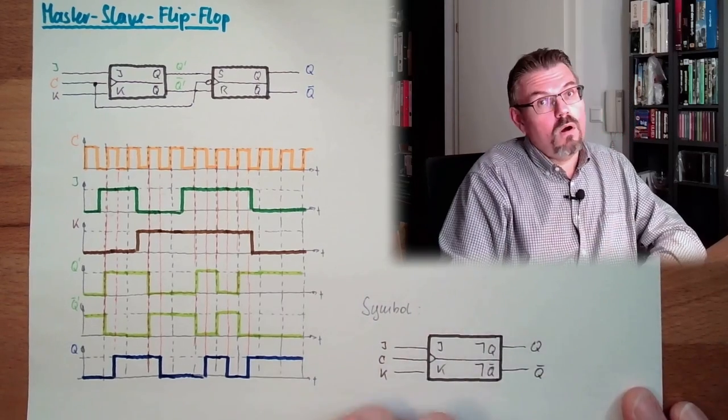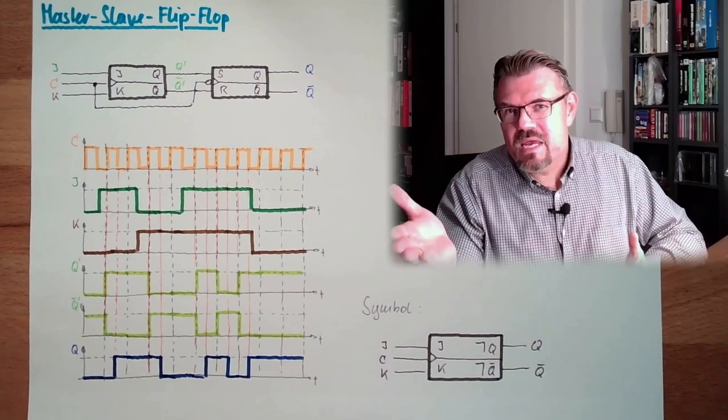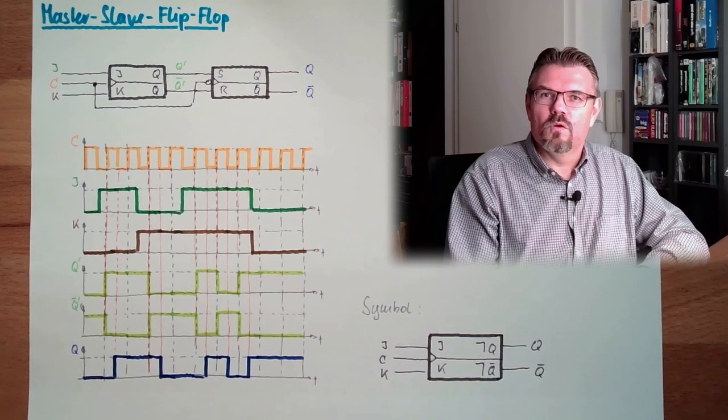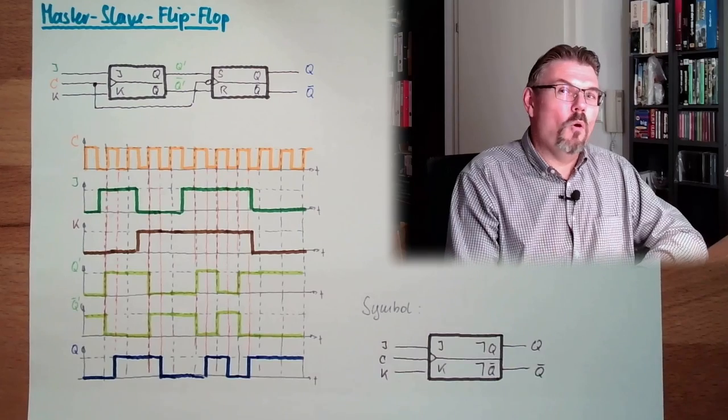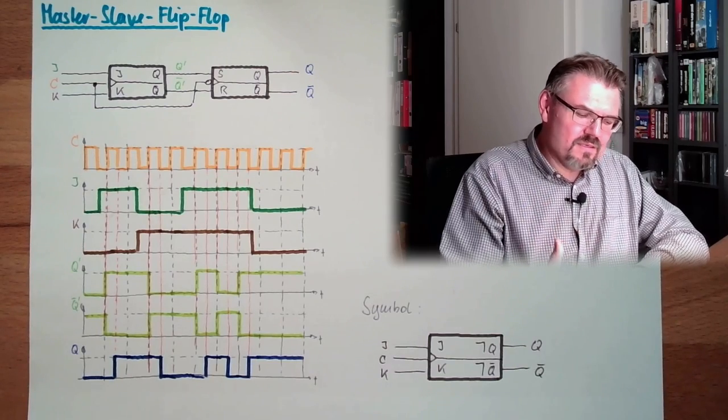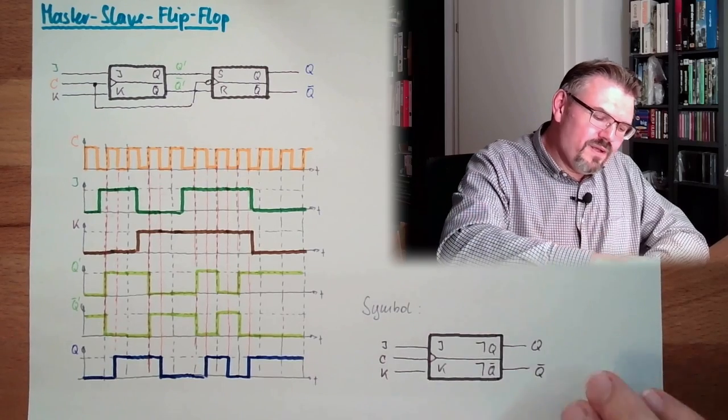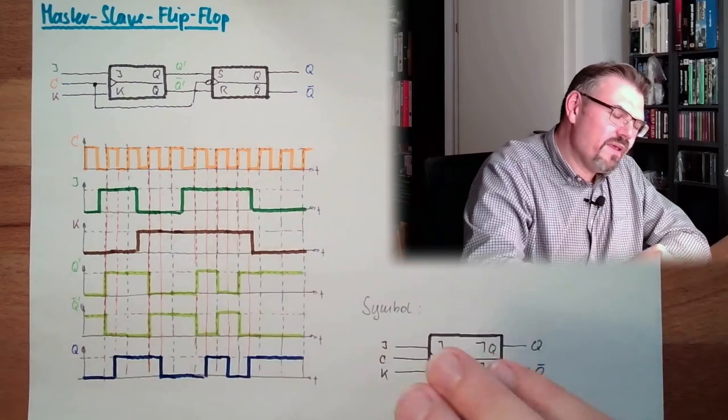It's not a yes, it's not a no, it's a maybe. A maybe is not really a logic word, right? What will the output do? Well, maybe it will be one. Maybe not. No, this is not. We need to have stable things. And we reach this, that the outputs will stay stable until the falling edge of the clock.